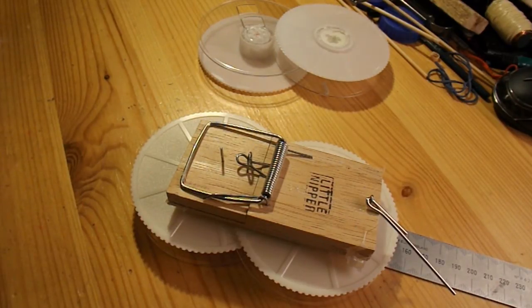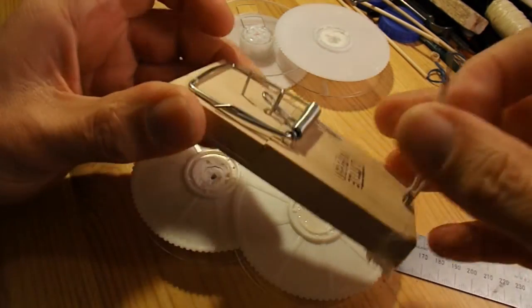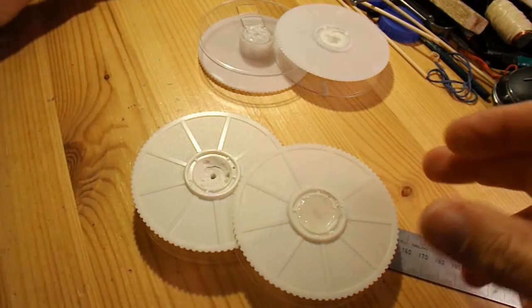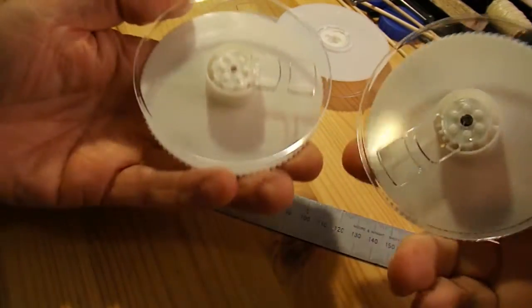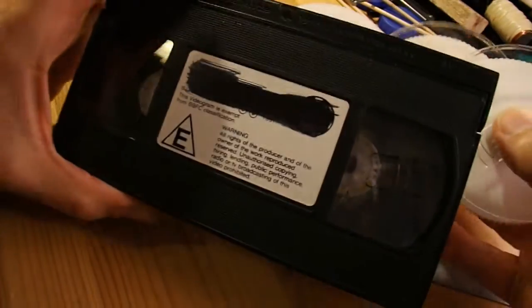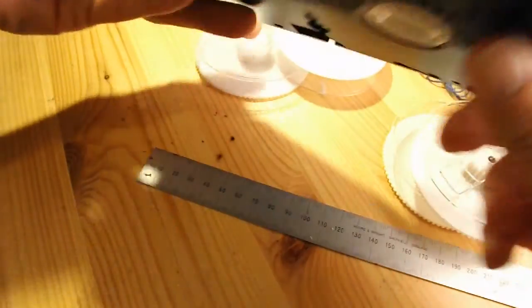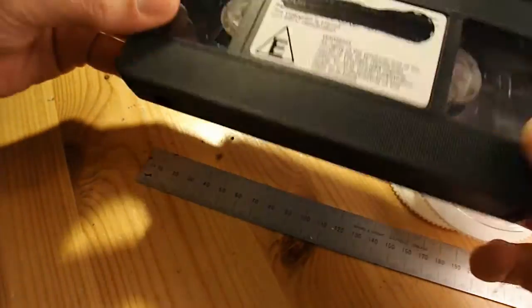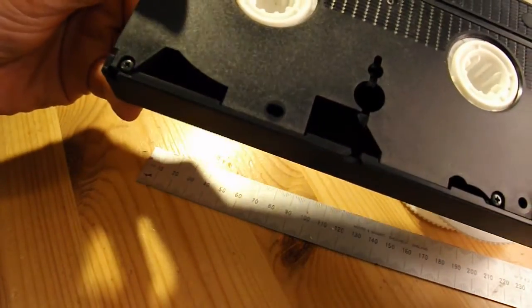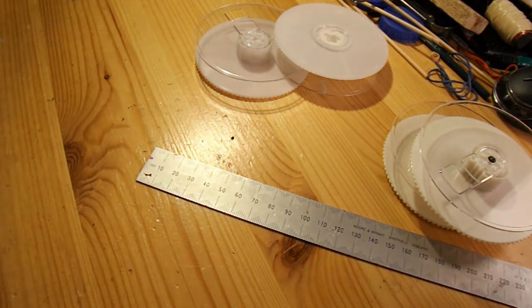And what I'm gonna do in this project is use this mousetrap as the power source, and for the wheels, I'm gonna use these spools out of one of these old VHS video cassettes, which you may or may not have seen. That's what we used to have before we had CDs and DVDs.